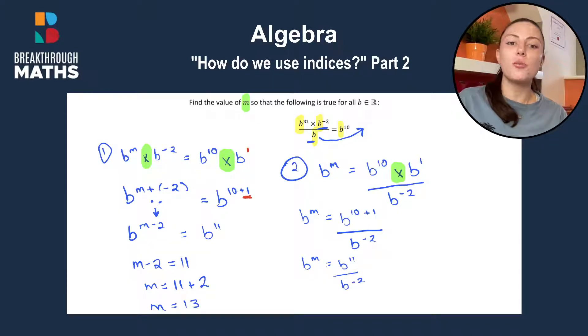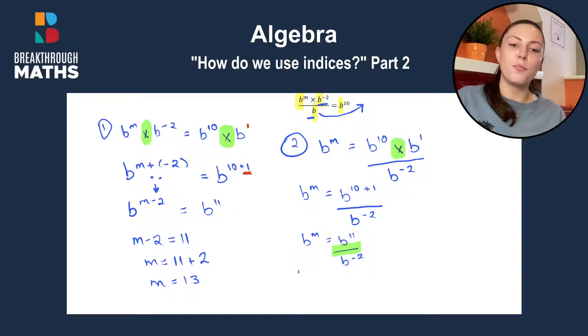What rule do we have to use next? We see we have a divide sign now, which means you have to subtract the powers. So B to the power of M is going to be equal to B to the power of 11 minus minus 2 because we're subtracting when we have a divide sign. And simplifying that leaves us with B to the power of M is equal to B to the power of 11 plus 2 because minus by minus gives us a plus,